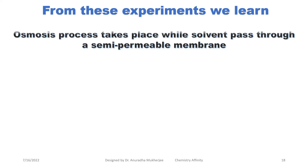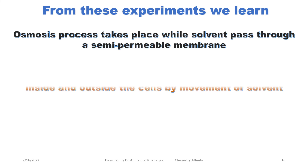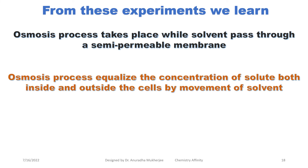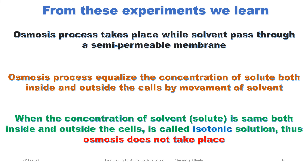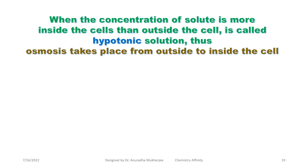From these experiments we learn what the process of osmosis is and how osmosis takes place. Osmosis takes place only when the solvent passes through a semi-permeable membrane — the solute does not pass through. The osmosis process takes place to equalize the concentration of solute both inside and outside the cells. When the cell is in an isotonic solution, the concentration of solute inside and outside the cell are equal, and osmosis doesn't take place. But when the concentration of solute is more inside the cell than outside, it is called a hypotonic solution, and in that case osmosis takes place from outside to inside the cell, and cells get enlarged.